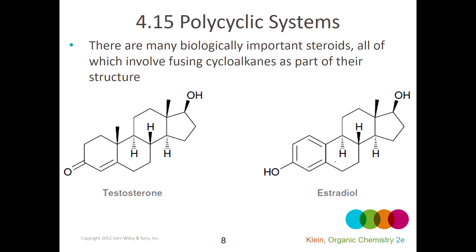Cyclic systems are also the basis for all biologically important steroids. Steroid compounds typically have four fused rings — three six-membered rings and one five-membered ring. Depending on what groups are bonded, whether there are double bonds, and the degree to which an alcohol is oxidized or reduced, you get different steroids like testosterone and estradiol. They all differ in what groups are attached or in the stereochemical arrangement of those groups, but the cyclic system framework is common to all steroids.